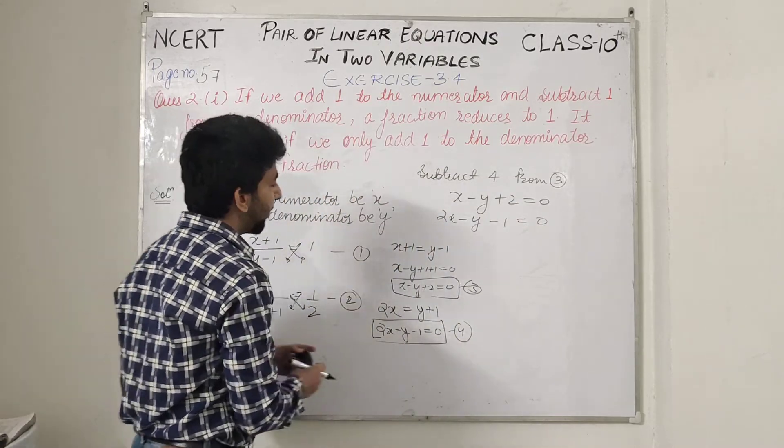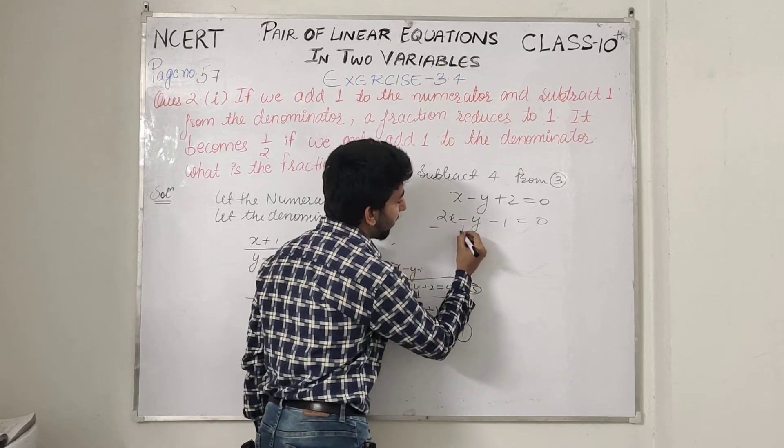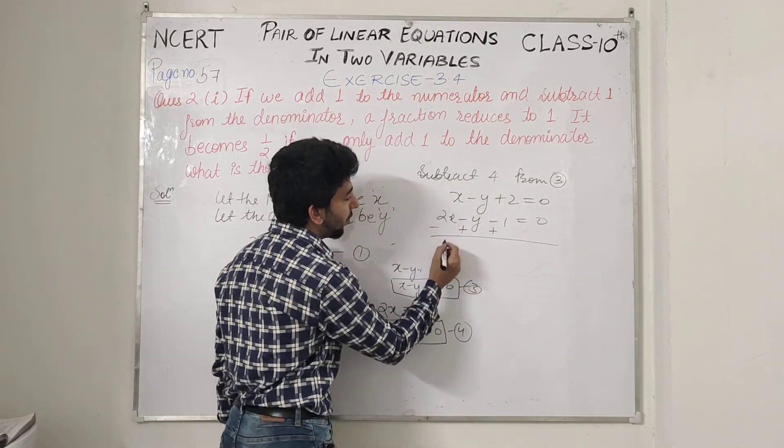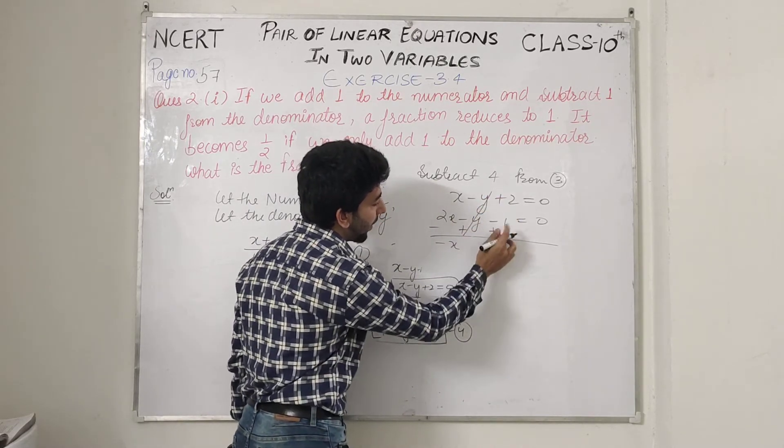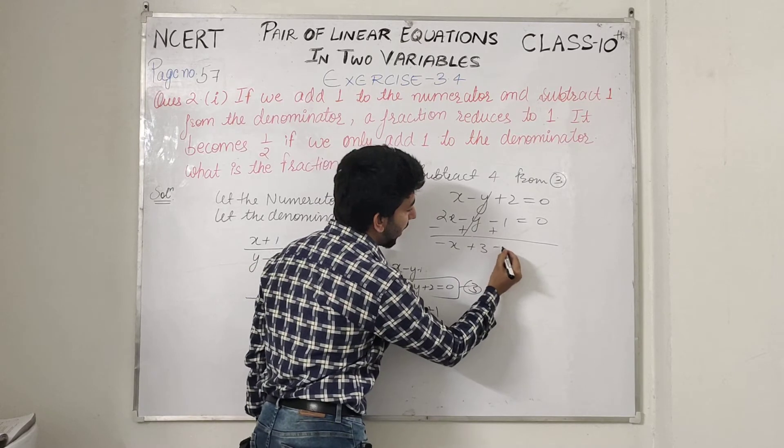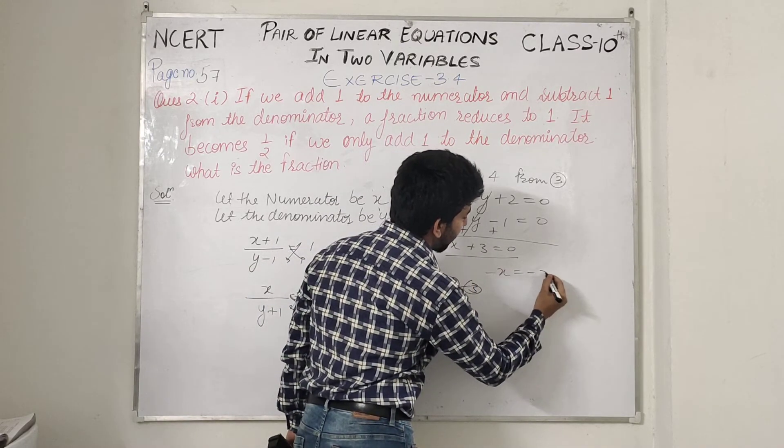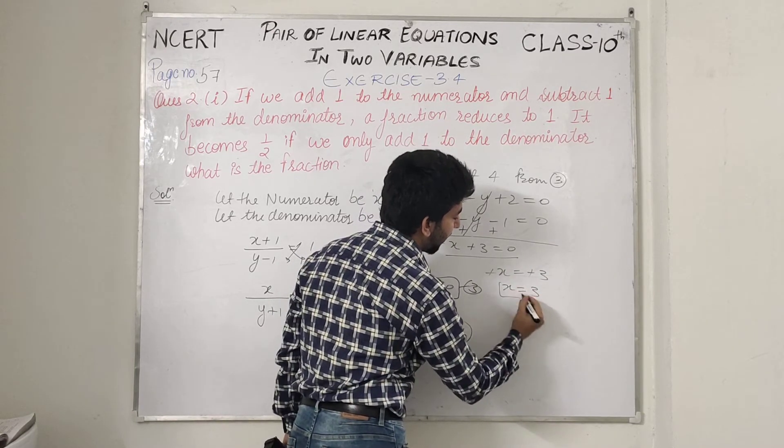Sign changes: minus, plus, plus. 1 minus 2, minus x, y eliminates, 2 plus 1 is 3 equals 0. X equals 3.